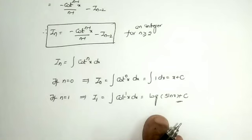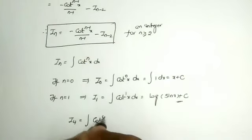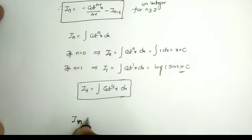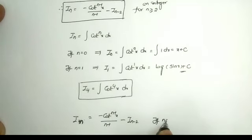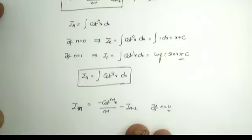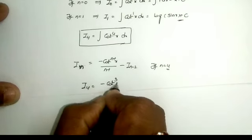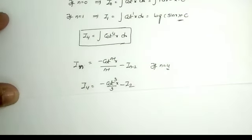That is the value of I_1. Now we have to find the value of I_4, that is the integral of cot^4 x dx. It is enough to replace n equals 4 in the reduction formula. So using I_n equals minus cot^(n-1) x divided by (n-1) minus I_(n-2), with n equals 4: I_4 equals minus cot^3 x divided by 3 minus I_2.